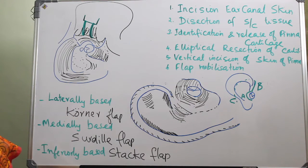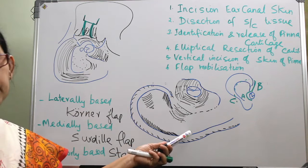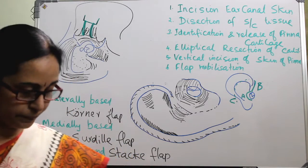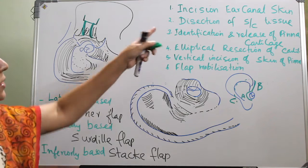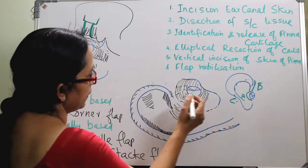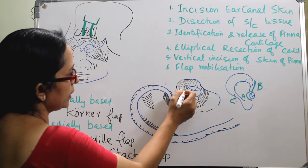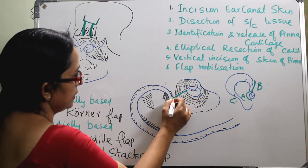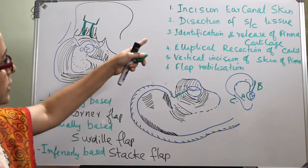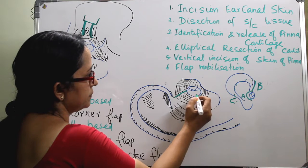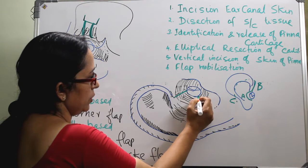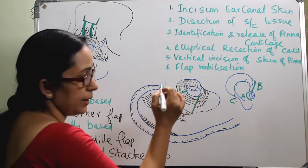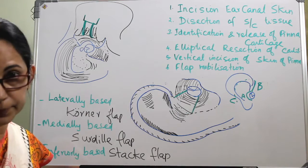The corner flap can be done by an endoaural approach and also by a postaural approach — that is why it is the most commonly used type of flap. For the incision of the ear canal skin, we put the Hermann B. We put a vertical incision starting from 12 o'clock through the incisura terminalis. The second incision goes from 6 o'clock, and again a circumferential incision at the bony-cartilaginous junction, like the Lempert endoaural.